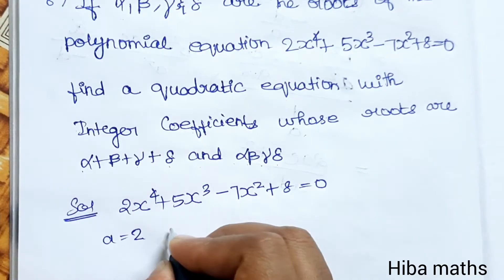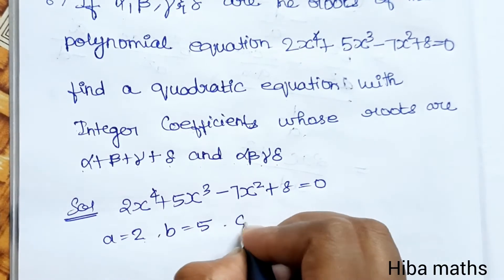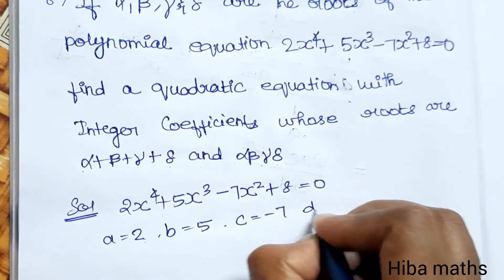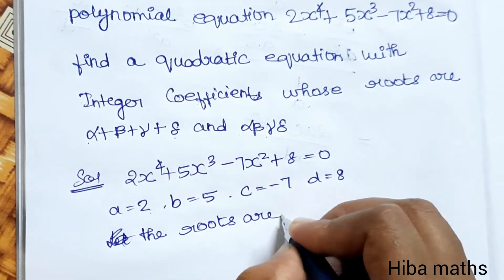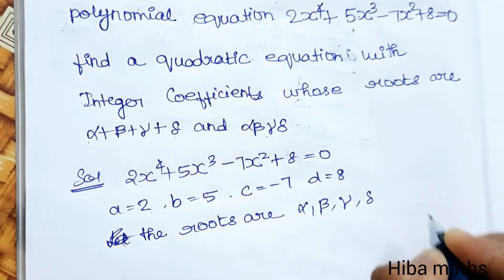a = 2, b = 5, c = -7, d = 8. The roots are α, β, γ, and δ.